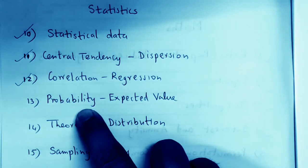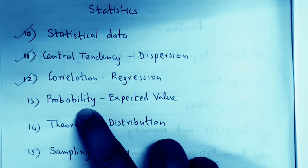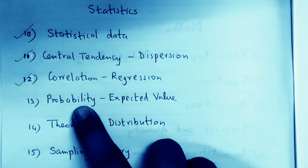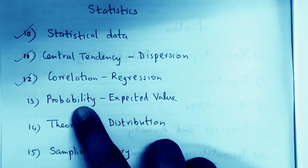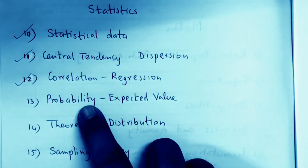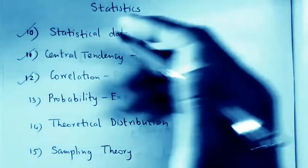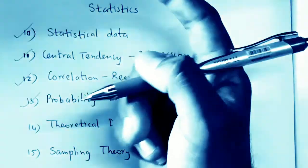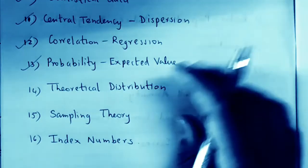Next comes Probability. If you've studied combinations, probability shouldn't be too difficult — you just divide by the sample space. Basic sums like throwing two dice or tossing three coins may appear. Probability is also not to be left as an option.